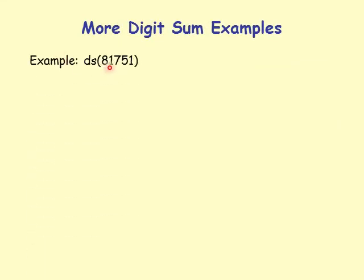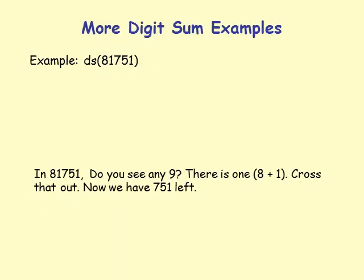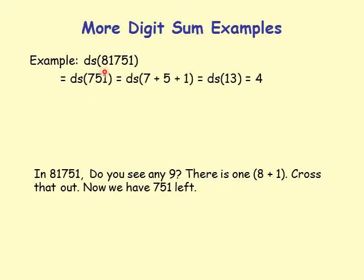More examples using the cross-out shortcut: for 81751 — do you see any 9s? Yes, 8 plus 1 makes 9, so cross that out. Now I have 751 left. Digit sum of 751 is 7 plus 5 plus 1, which is the digit sum of 13, which is 4.